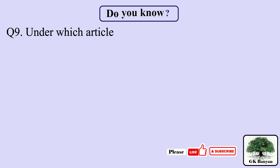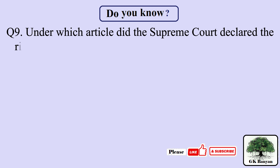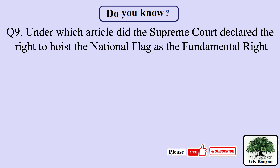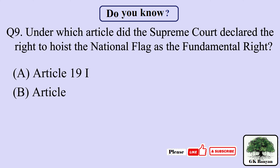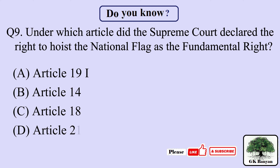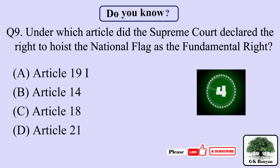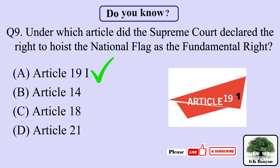Question 9. Under which article did the Supreme Court declare the right to hoist the national flag as a fundamental right? Your options are A. Article 19(1)(a), B. Article 14, C. Article 18, D. Article 21. The right answer is A. Article 19(1)(a).